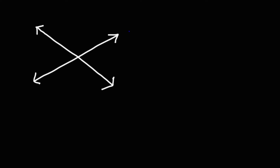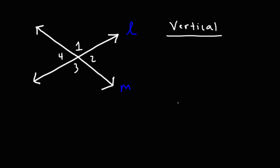Here we have two lines intersecting each other. Let's call this line L and line M. As a result, they form four angles: angle 1, 2, 3, and 4. Which of these angles are vertical angles, and which ones are adjacent angles?